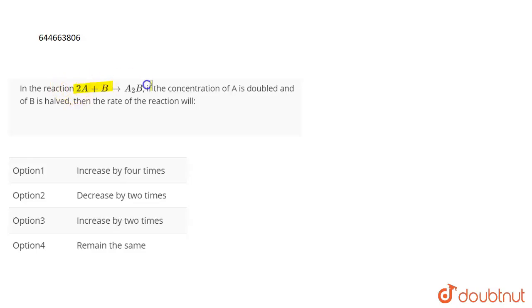The question is: in the reaction 2A plus B giving A₂B, if the concentration of A is doubled and B is halved, what will be the rate of the reaction?